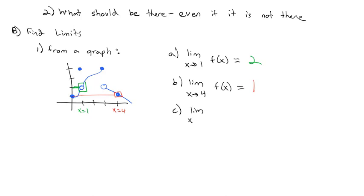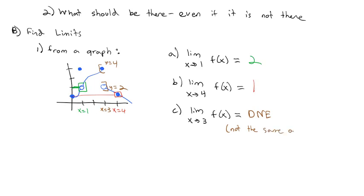What's interesting is the limit as x goes to 3. On the left side of 3, it's approaching a y-value of 4. But on the right side of 3, it's approaching a y-value of 2. For the limit to exist, it has to be approaching the same value on both sides. Because we have this jump in the graph and we're not approaching the same value on both sides, we say the limit does not exist.